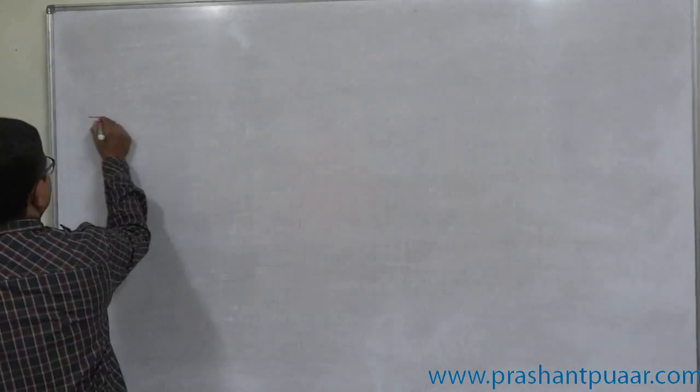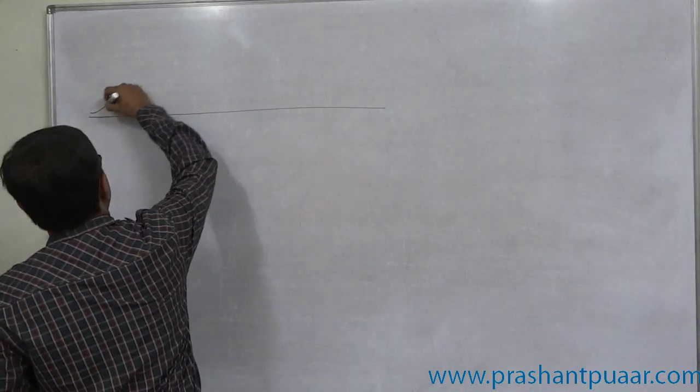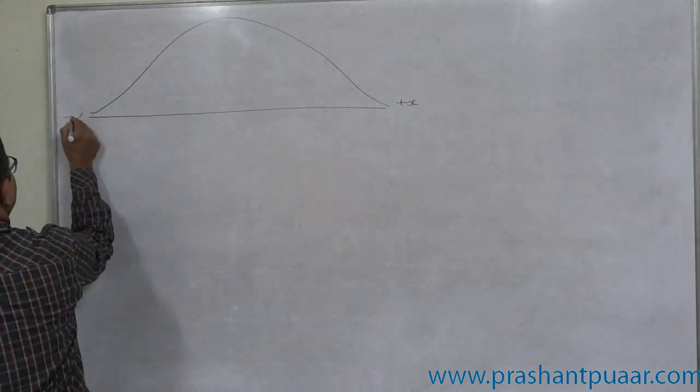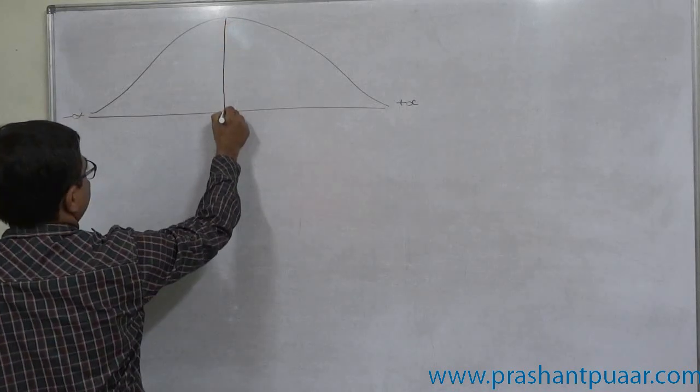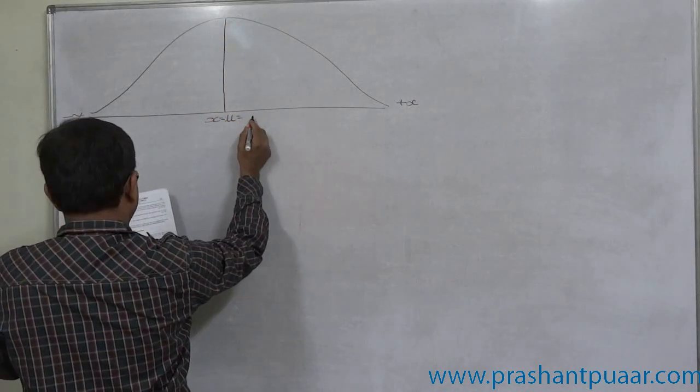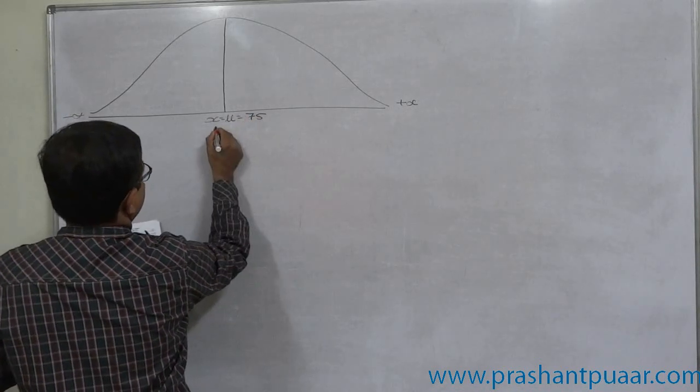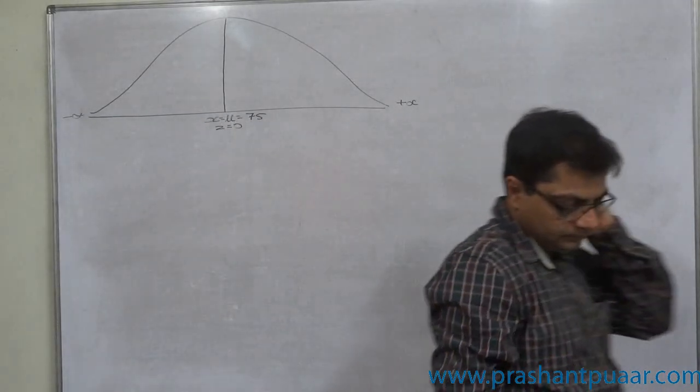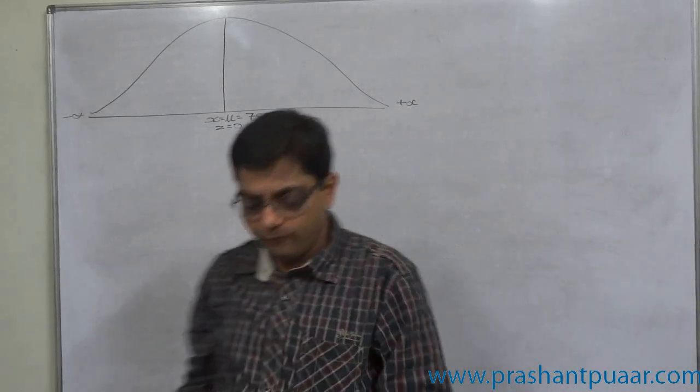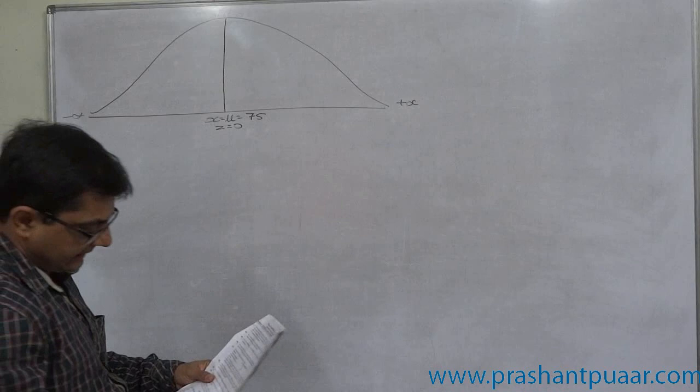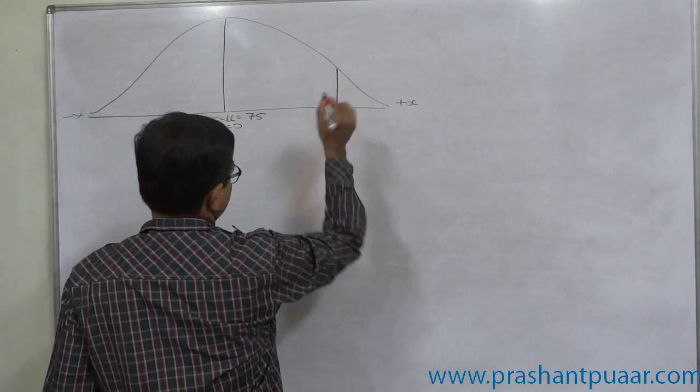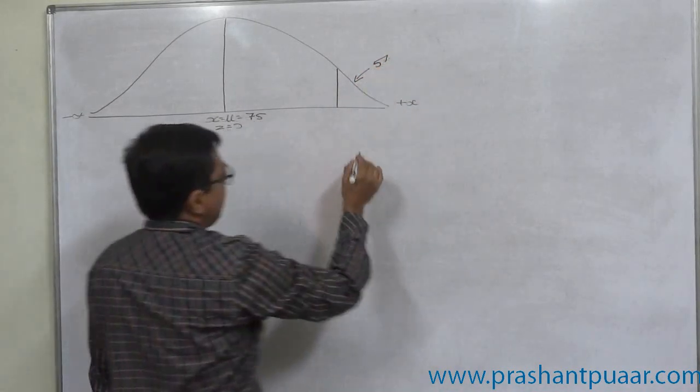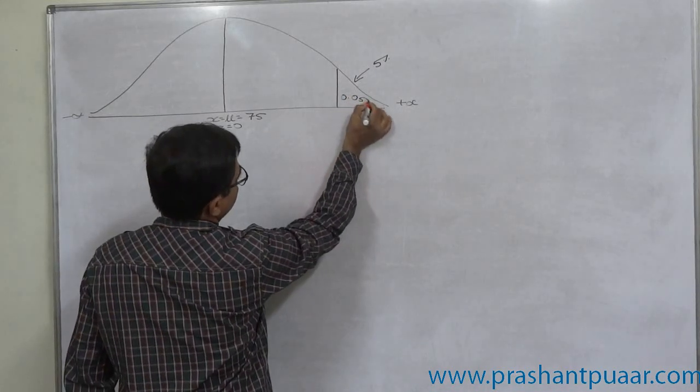Let us draw the diagram first. If the top 5 percent of the students get grade A, that means this 5 percent students get grade A. 0.05 should be the area.